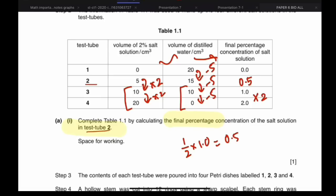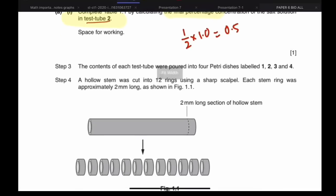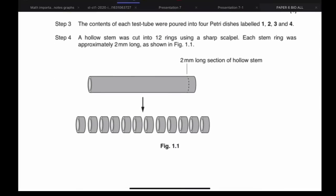Always make sure in these table calculation questions you're finding a trend. Make sure you find a pattern and write your answer based on that, because most of the time it's very simple patterns — multiplication, division — that are very evident. You just have to find the pattern and calculate on the basis of it.